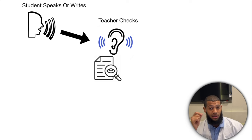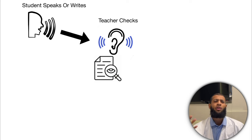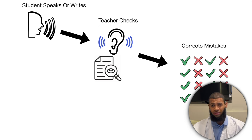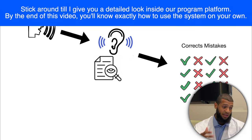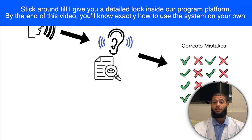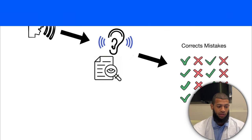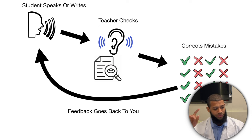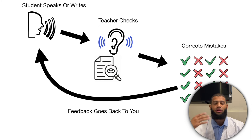Visually, this is how it works: you as a student speak or write, then the teacher listens to your speech or checks your written sentences, and then the teacher corrects your mistakes. If you're thinking 'where am I going to get a teacher?' don't worry — at the end of this video I'll tell you how to put this into practice and find a system that is already proven. After your mistakes are corrected, the feedback goes back to you, and it's your job to take that feedback, iterate, and make it better.